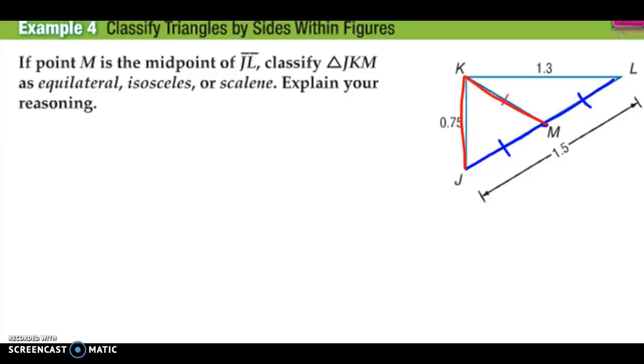As equilateral, isosceles, or scalene. So if I'm looking at this one right here, if the whole distance from J to L is 1.5 and M is the midpoint, it means that J to M is going to be half of that, which is 0.75. This is also 0.75. Now, I colored over it in blue, but if I was to erase it, you'd see that there's the red tick mark right here and right here, which means that this side is also 0.75.